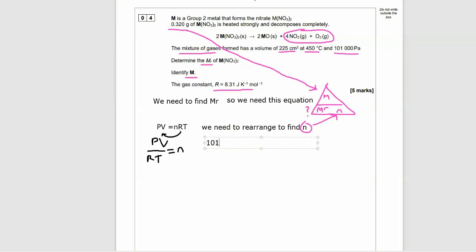For our second mark, we need to write all these things out and do any conversions. The pressure is in pascals, which is good because that's what it needs to be in for this equation. Don't forget to use brackets in your scientific calculator. We then need to divide centimeter cubed by 1 million to get into meters cubed, so 225 over the top of 1 times 10 to the power of 6.